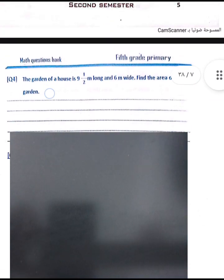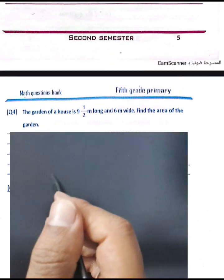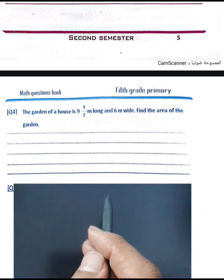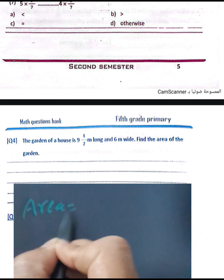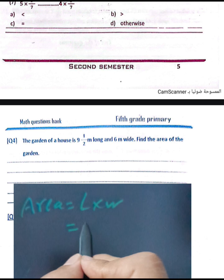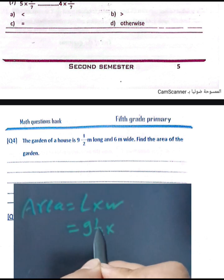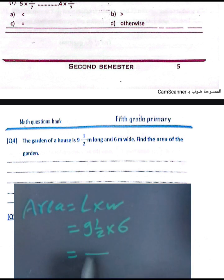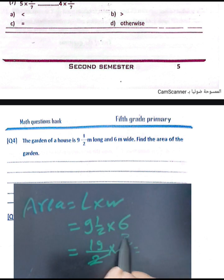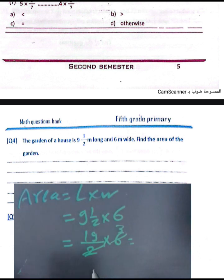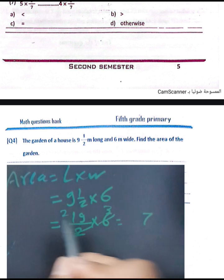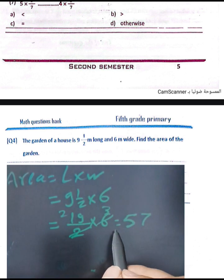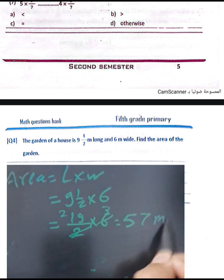Question number four: the garden of a house is nine and a half meters long and six tenths of a meter wide. Find the area. Area equals length times width. Nine and a half equals nineteen over two. Nineteen over two times six tenths: simplify to get 57 over 10, which equals 57 square meters.